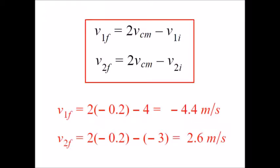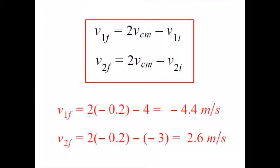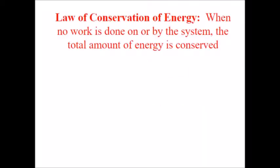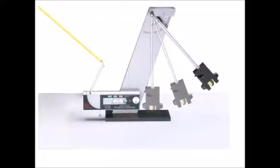Plugging in negative 0.2 meters per second for the velocity of the center of mass and finishing the equations gives negative 4.4 meters per second and 2.6 meters per second — we got them. A system with no external forces on it will conserve energy. An elastic collision conserves all that energy as kinetic energy, while an inelastic collision transforms it into thermal energy, sound energy, or some other type. You're not destroying energy — you might just be making it less useful.